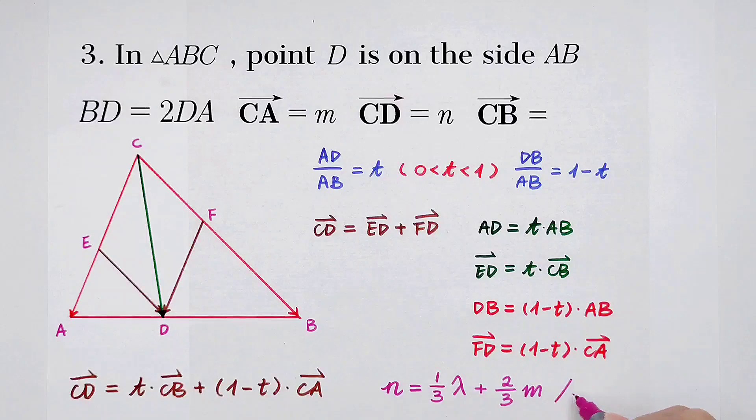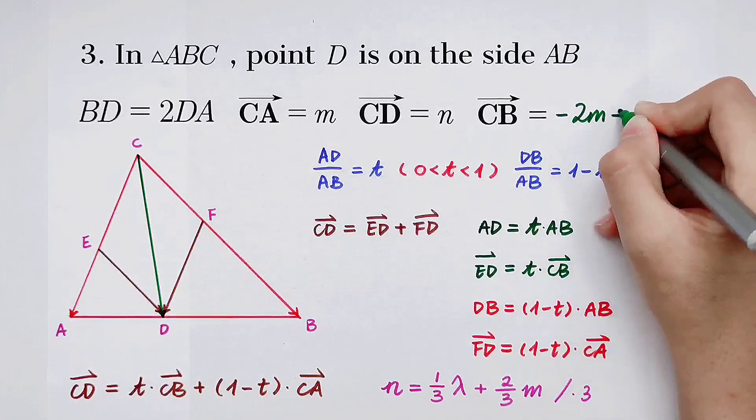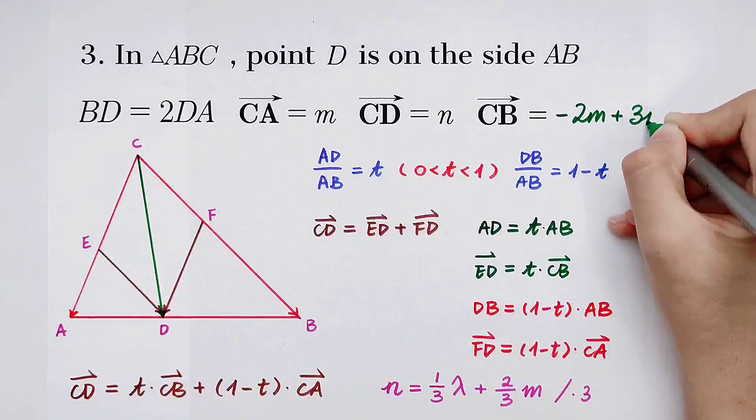And you solve it. We can multiply by 3 on both end sides, and 3N is equal to lambda, then plus 2M. And then you can solve, CB is equal to minus 2M, then plus 3N.